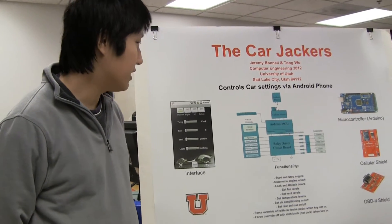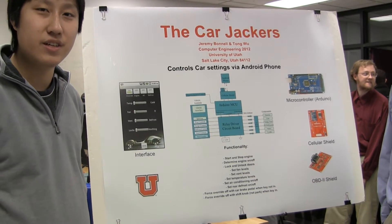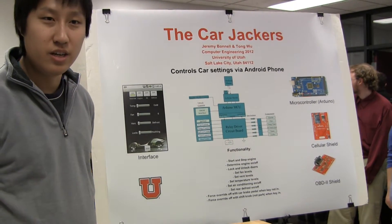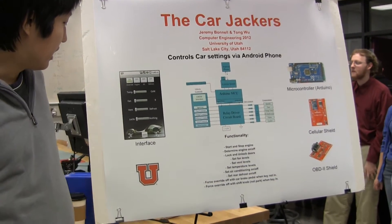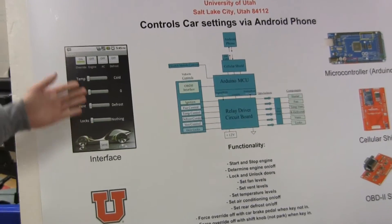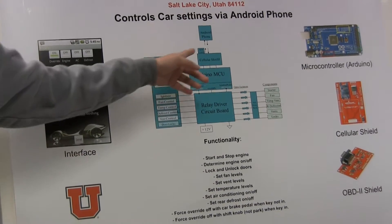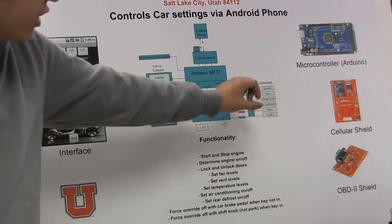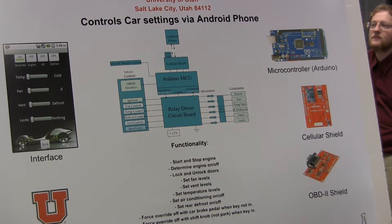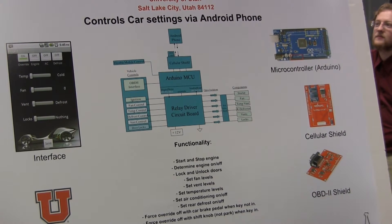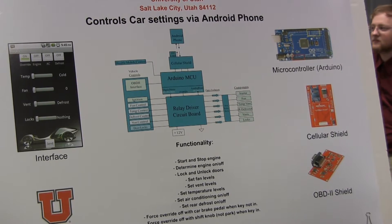Here's our project. Basically, we're using an Android phone to control car settings such as stop and start engine, turn the temperature, and fan levels. Here's our Android app interface — you can see all the settings over there — which sends to the cellular shield, which has a SIM card in it with a number so you can communicate messages. Basically, this phone sends a text message to the cellular shield.